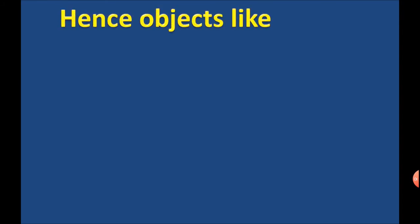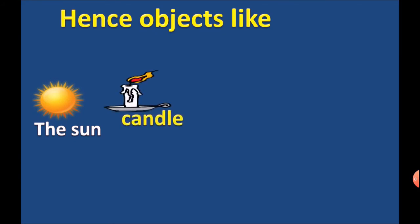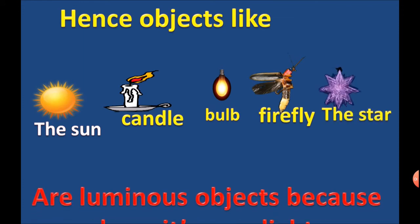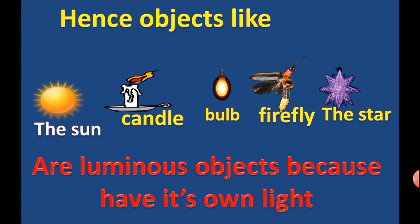Hence, objects like the sun, candle, bulb, firefly, and stars are luminous objects because they have their own light.